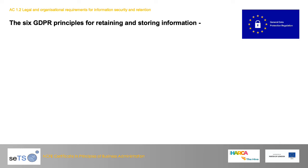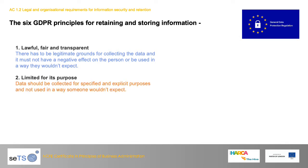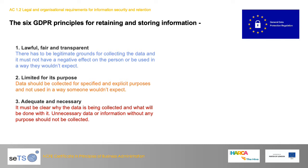The six GDPR principles for retaining and storing information. Number one: it must be lawful, fair, and transparent — there must be legitimate grounds for collecting the data and it must not have a negative effect on the person or be used in a way they wouldn't expect. Number two: it must be limited for its purpose — data should be collected for specified and explicit purposes and not used in a way someone wouldn't expect. Number three: adequate and necessary — it must be clear why the data is being collected and what will be done with it. Unnecessary data without any purpose should not be collected.